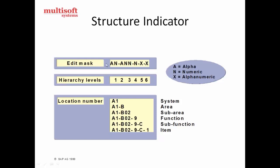This is the structure indicator which we create for functional locations, and this is what the edit mask is. The edit mask uses A, N, and X — meaning alphabet, numeric, and alphanumeric respectively. The hierarchy levels in a functional location can go up to a maximum of six levels. We can define one through six levels, but not more than that.